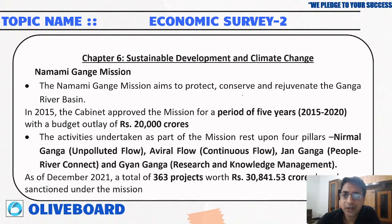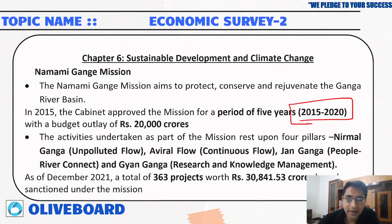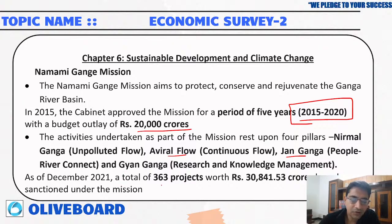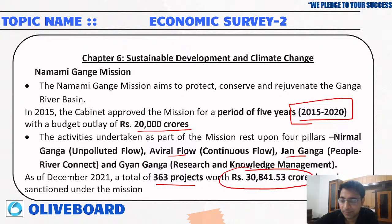The Namami Ganga Mission aims to protect, conserve, and rejuvenate the Ganga river basin. For the period 2015 to 2020, a budget of rupees 20,000 crore was allocated. Key components include Nirmal Ganga — unpolluted flow; Aviral Ganga — continuous flow; Jan Ganga — people-river contact; and Gyan Ganga — research and knowledge management. As per December 2021, a total of 363 projects worth rupees 30,841 crore have been sanctioned. The Clean Ganga Fund, established in 2014, has received a total of rupees 561 crore as of 31st December 2021.